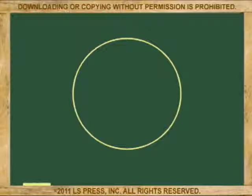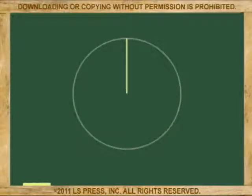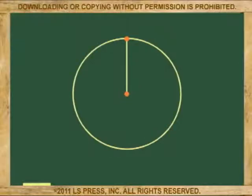We begin with the vertical segment. Like always, we mark the endpoints of the segment. Now, using the lower point as the center of the circle, we draw a circle with a radius the size of the segment.